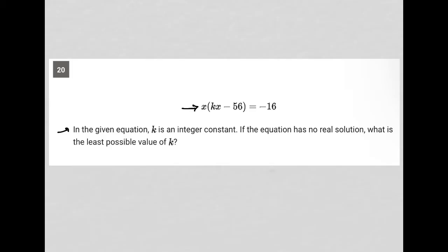I'll start by simplifying through distribution. x times xk gives x²k, and x times negative 56 gives -56x, which equals -16. Adding 16 to both sides leaves x²k - 56x + 16 = 0.